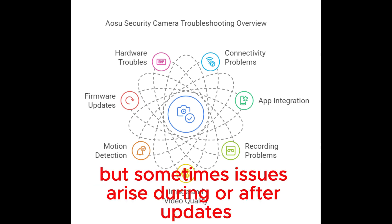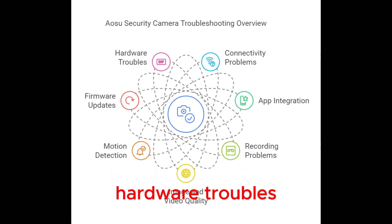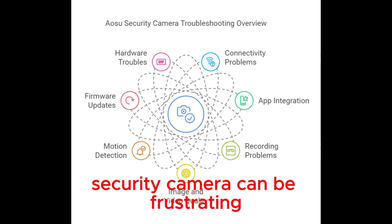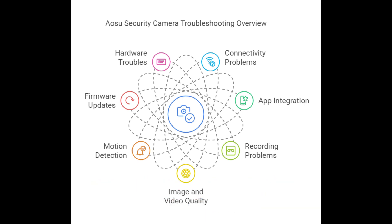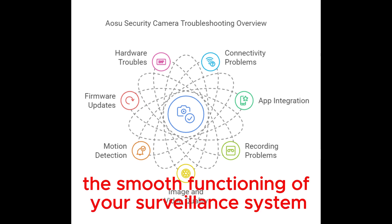Firmware Updates: Firmware updates are crucial for your IOSU security camera. They bring new features and fix bugs, and keeping the firmware updated ensures optimal performance. But sometimes issues arise during or after updates. This guide will help you troubleshoot these problems.